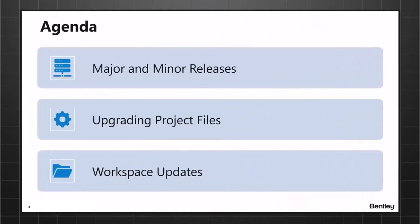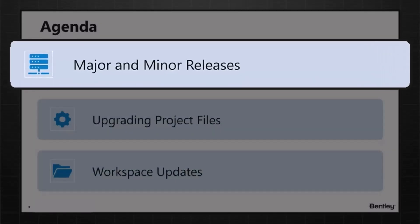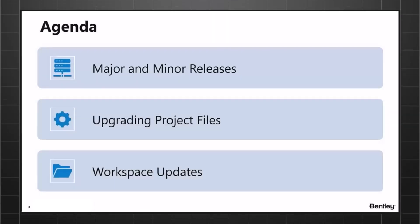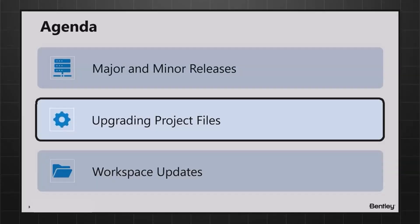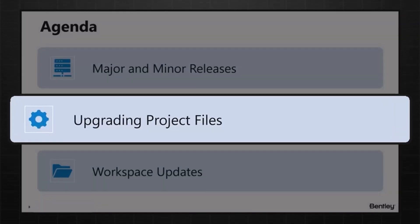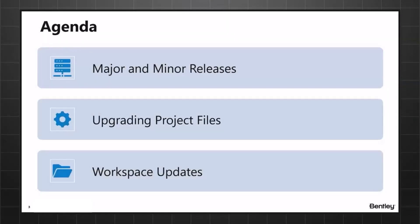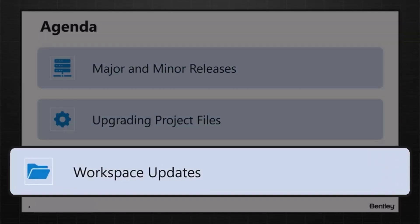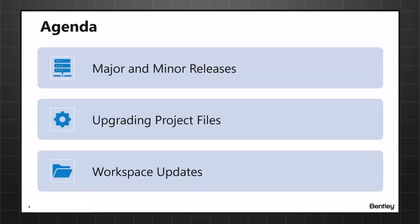This presentation is going to be done in three parts. First, we're going to talk about major and minor releases, just so we're clear about the differences. Then we'll get into the meat of the topic, which is upgrading project files. Finally, we'll look at workspace updates — what happens if you've also updated your workspace and how to apply those workspace updates across your projects.